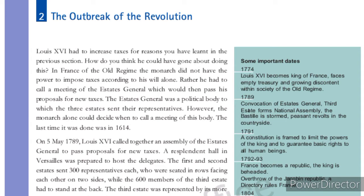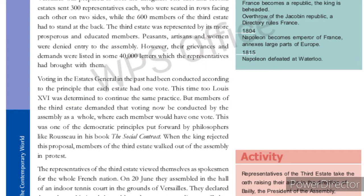Louis XVI called together an assembly of the Estates General on 5th May 1789 to pass proposals for new taxes. It was held in Versailles. The 1st and 2nd estates each sent 300 representatives, who were seated in rows facing each other on two sides, while the 600 members of the 3rd estate had to stand at the back, because they belonged to the last category.